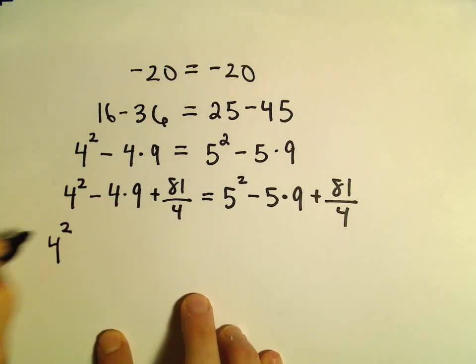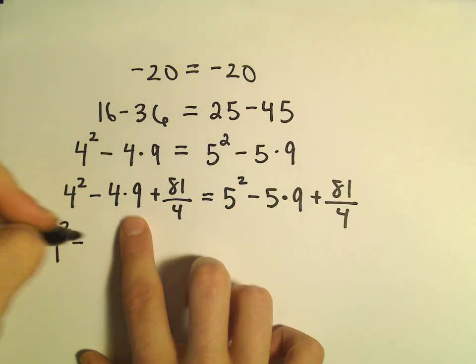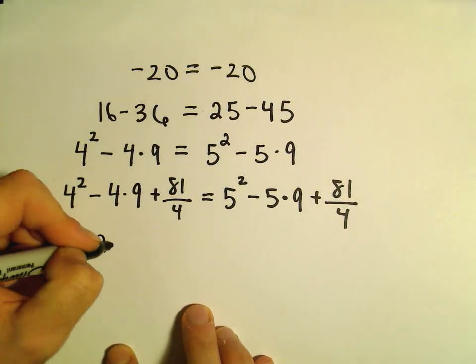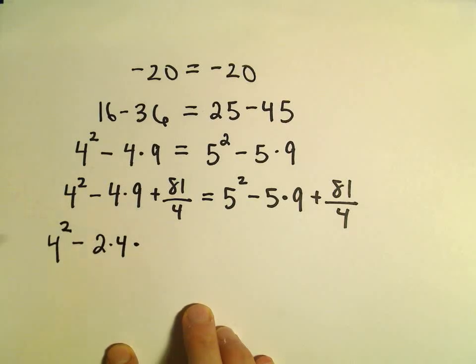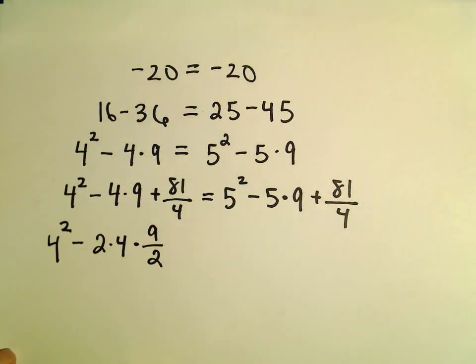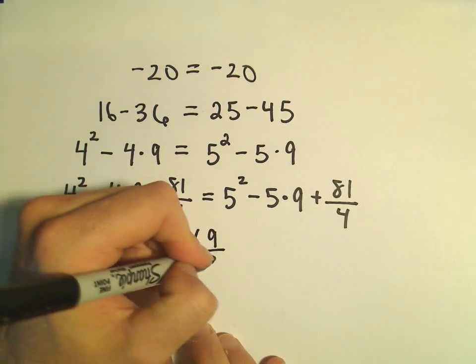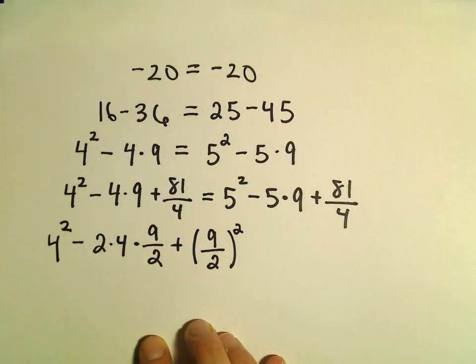I'm going to leave 4 squared alone. I'll rewrite 4 times 9 as 2 times 4 times 9 over 2. Then I'll rewrite 81 over 4 as 9 over 2 squared.